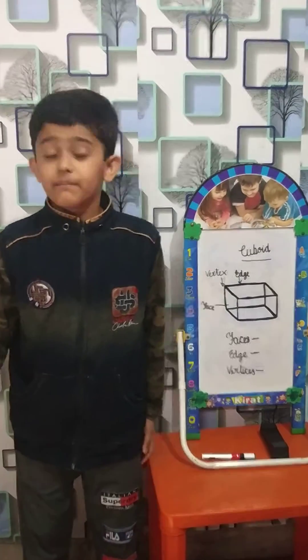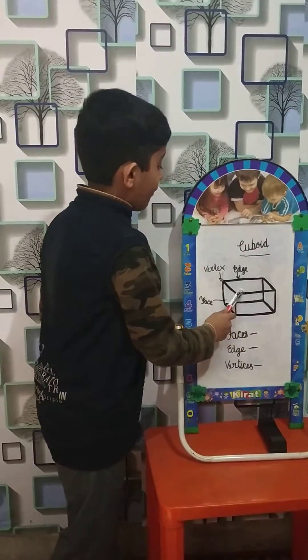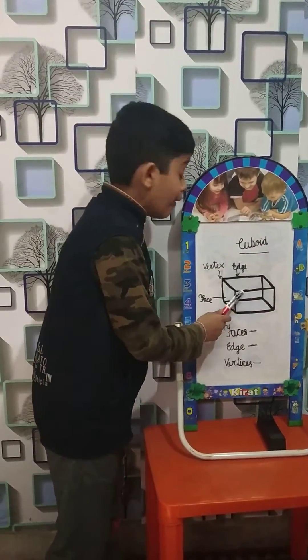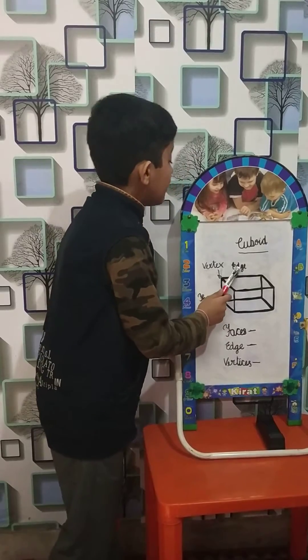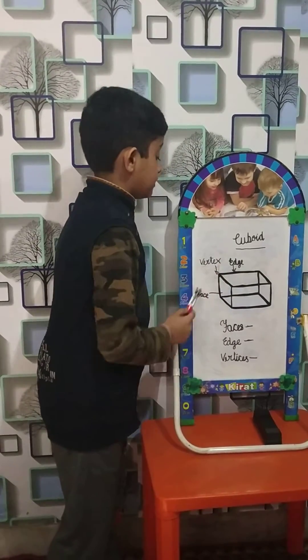Cuboid is a 3D shape. This is a cuboid. A cuboid has 12 edges, 8 vertices and 6 faces.